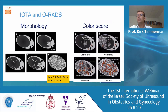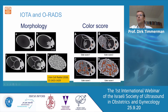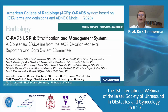The ORADS system is fully based on IOTA and common clinical practice in the United States. Morphology is classified the same way: unilocular, unilocular solid, multilocular, multilocular solid, or solid tumor. We use the same system for color score: color score 1, 2, 3, and 4 — where color score 1 means no flow, 2 is minimal flow, 3 is moderate flow, and 4 is very strong flow. This year, the ORADS system was finally published — a real collaboration between researchers from Flanders, UCSF, Harvard, Mayo Clinic, Johns Hopkins, McGill, and University of Toronto.